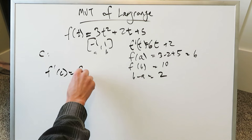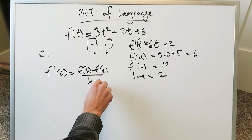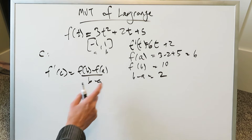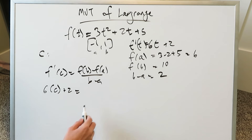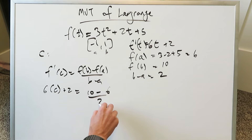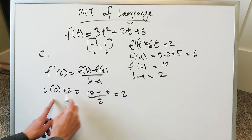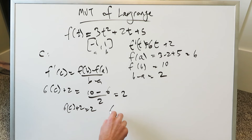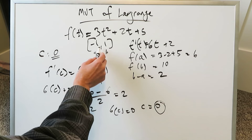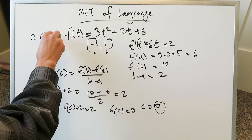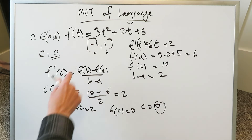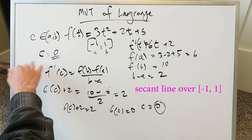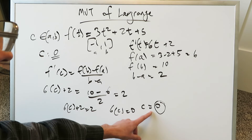The formula is f'(c) = [f(b) - f(a)] / (b - a). The right side is the slope of the secant: (y₂ - y₁)/(x₂ - x₁). Placing c into the derivative: 6c + 2 should equal this quotient. f(b) = 10, f(a) = 6, b - a = 2. So (10 - 6) / 2 = 4/2 = 2. Therefore 6c + 2 = 2, giving 6c = 0, so c = 0. There certainly is a point, and that point is 0. Zero falls within (-1, 1), so c is an element of (a, b), and at that point the slope of the tangent line equals the slope of the secant line.